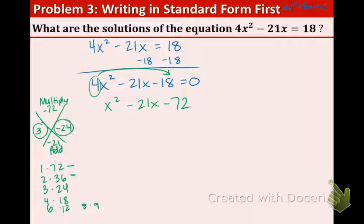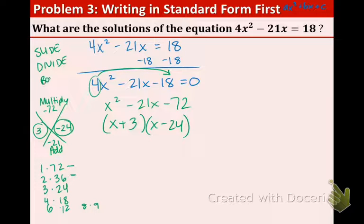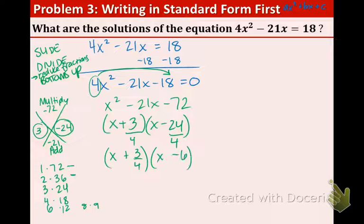So, now let's take those two numbers and rewrite them. x plus three and x minus twenty four. Remember, this is called slide, divide, bottoms up. And between the divide and the bottoms up is reduce fractions. So, slide, we did it. Divide, we did not do it yet. Divide by the number you slide. So, divide by four. We cannot reduce the three-fourths. However, we can reduce the twenty four over four. That's going to give us six. So, last step, bottoms up. Four goes in front. So, we have four x plus three and x minus six.